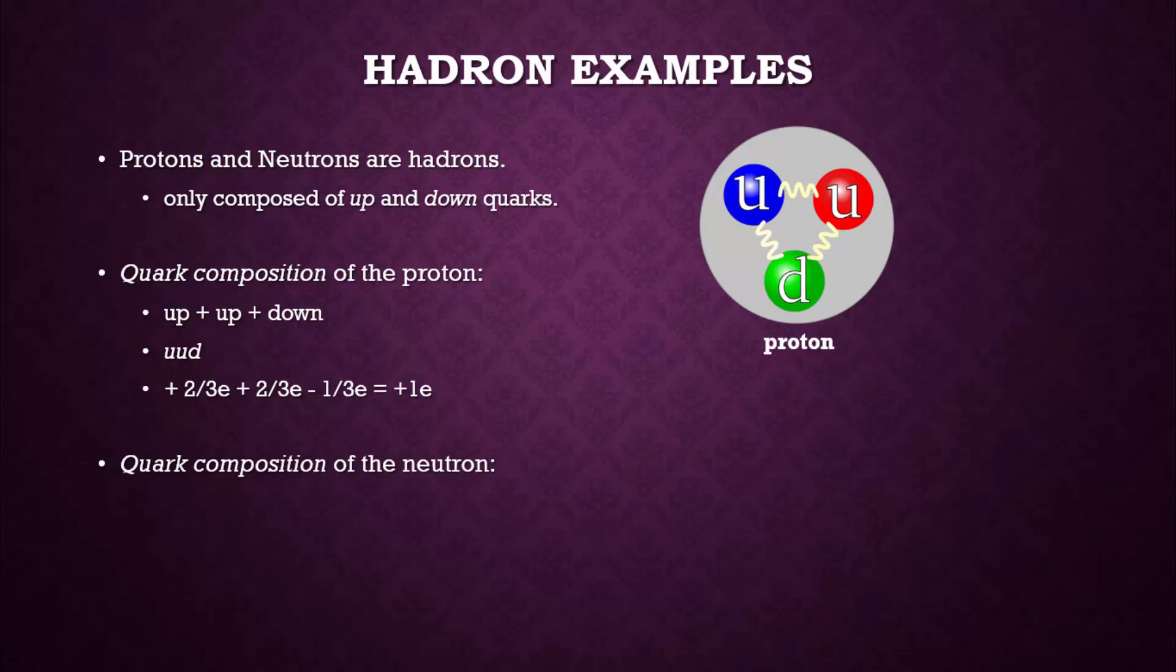Now let's take a look at the quark composition of the neutron. A neutron is composed of one up and two down quarks. This could be written as up, down, down. And of course, we end up with a charge of zero.